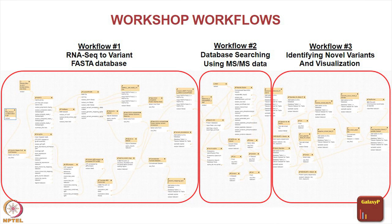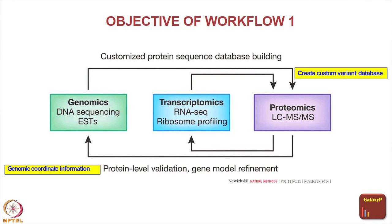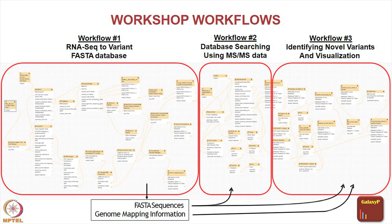The objective of the workflow is to show that if you have genomics data, you can generate a customized database for your proteomics experiment, or you can also use RNA-seq data to do that. Once you get the data, you should be able to modify a gene model — you might find peptides identified in regions you would not have found earlier because of some genomic rearrangement, which could be a single amino acid variant or an insertion or deletion. The first workflow takes in RNA-seq data and generates a protein FASTA file, and it also generates genomic mapping information.